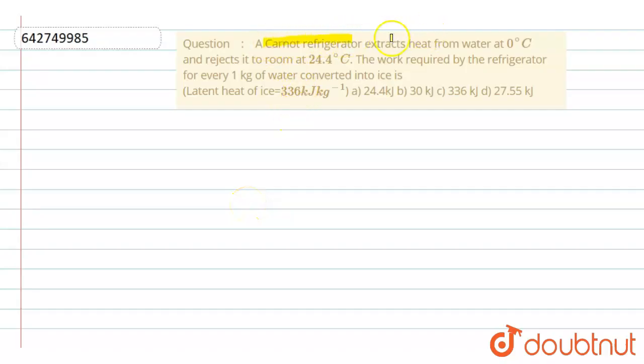...is a Carnot refrigerator that extracts heat from water at 0 degree Celsius and rejects it to a room at 24.4 degree Celsius. So here in this question, how much work is required by the refrigerator for every one kilogram of water converted into ice?